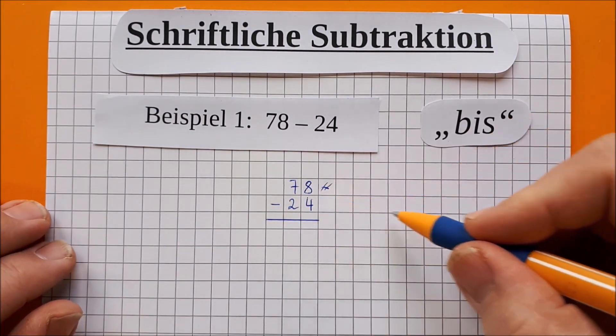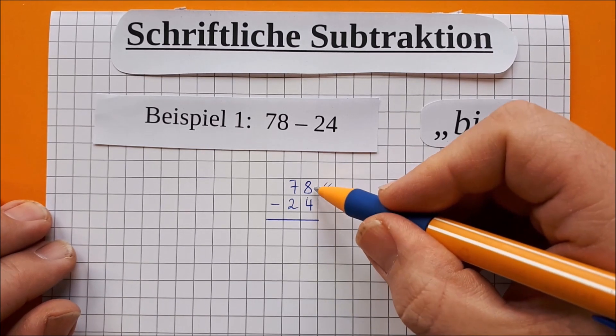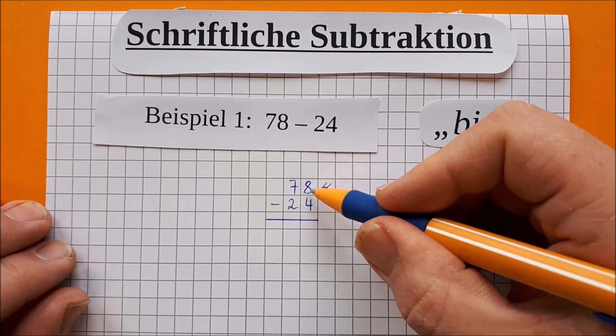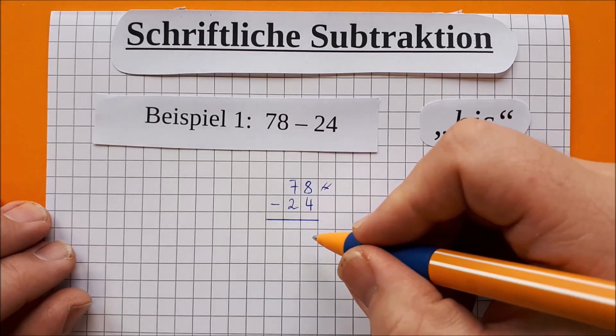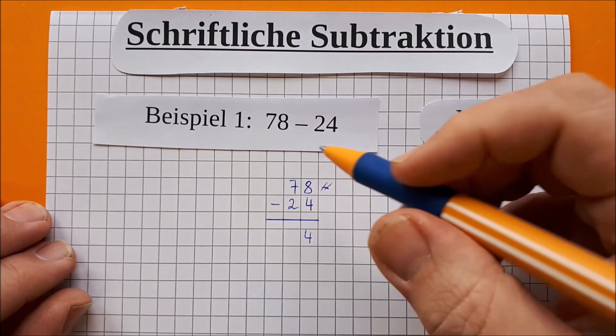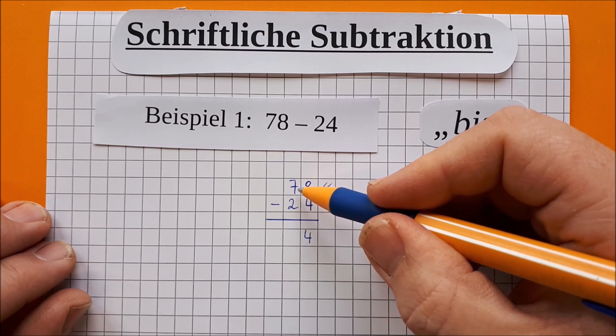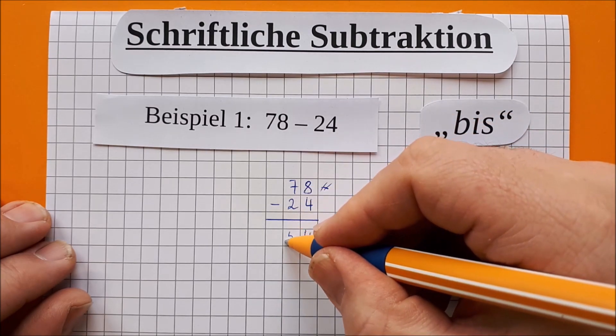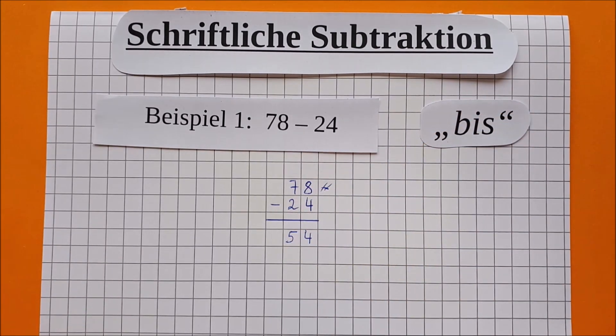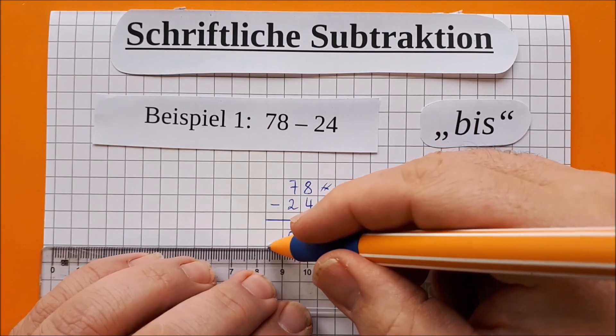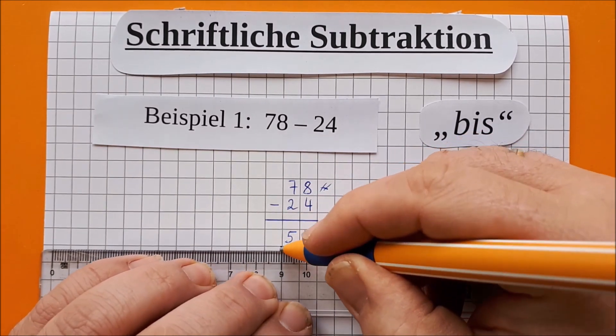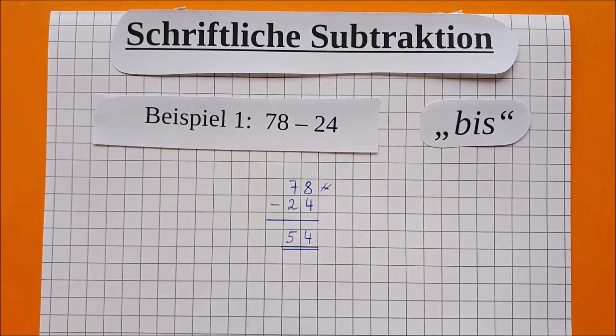Und dann kommt das Zauberwort bis. 4 bis 8, also von der 4 bis zur 8 sind es 4, habt ihr genau recht. Und von der 2 bis zur 7 sind es 5. Das müssen wir jetzt noch doppelt unterstreichen. Und dann haben wir es auch schon geschafft. Das war die erste schriftliche Subtraktionsaufgabe eures Lebens.